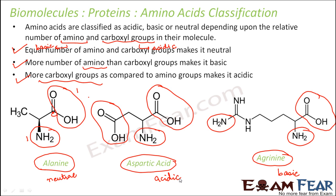These are some of the methods by which we can classify whether a particular amino acid is acidic, basic, or neutral. Similarly, we can also tell whether the amino acid is an alpha, beta, or gamma amino acid depending upon their arrangement. Whenever we talk about amino acids that make proteins, we are going to talk about only the alpha amino acids mostly.